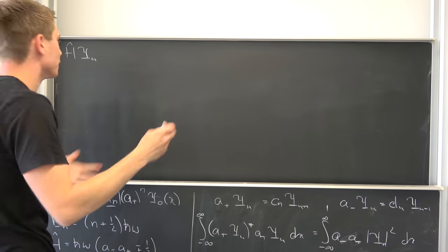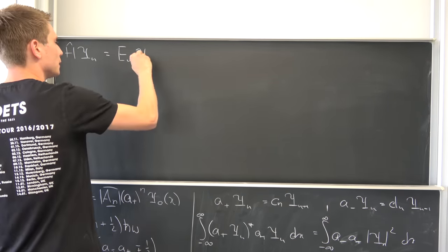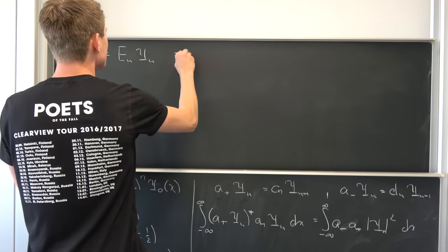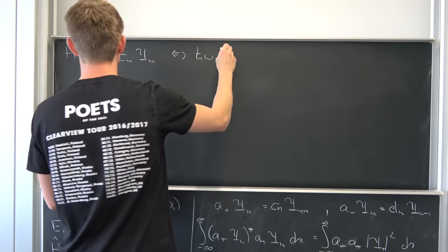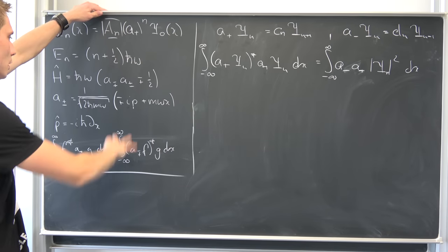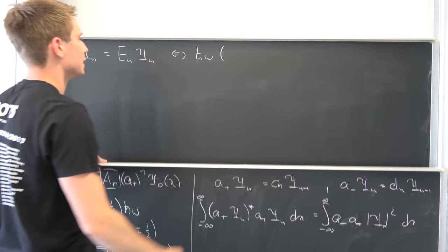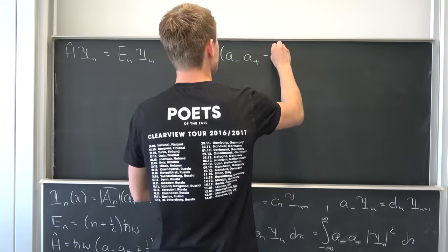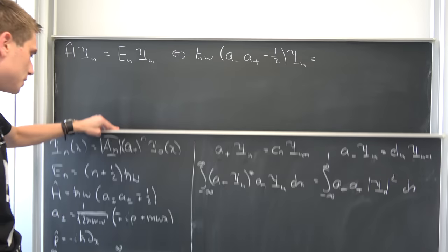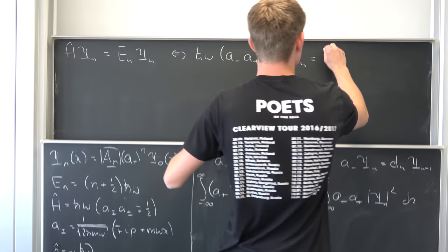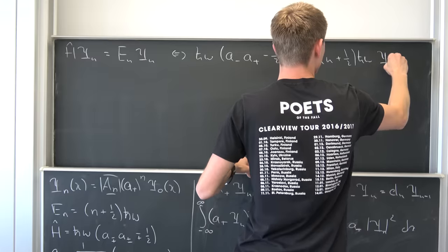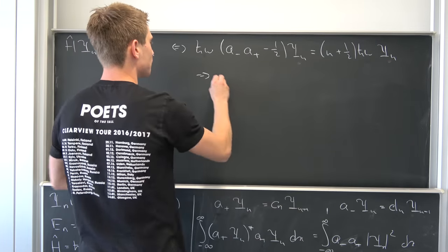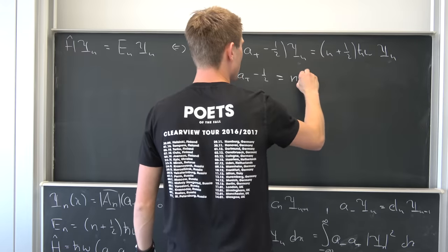We can make use of other formulas. Don't forget what the Schrödinger equation actually is: the Hamiltonian operator times ψₙ equals the energy Eₙ times ψₙ — the original eigenvalue problem. Plugging in, the Hamiltonian is ħω times (a₋a₊ − 1/2), so ħω(a₋a₊ − 1/2)ψₙ equals the nth energy Eₙ = (n + 1/2)ħω times ψₙ. Comparing coefficients, a₋a₊ − 1/2 must equal n + 1/2.